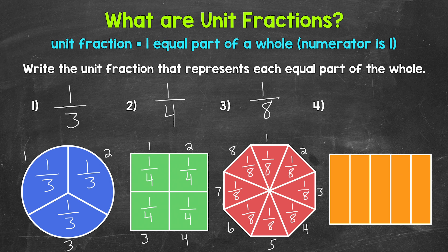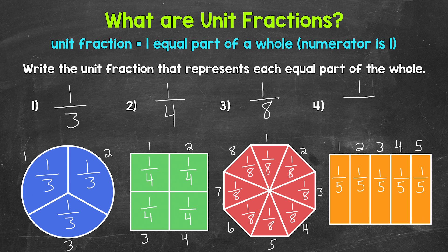Moving on to number four, let's see how many equal parts this whole rectangle has been divided into — one, two, three, four, five. Each equal part is one out of five total equal parts. Our unit fraction here is one fifth. Each part of the rectangle is one fifth of the whole. So one fifth is the unit fraction that represents each equal part of the whole.